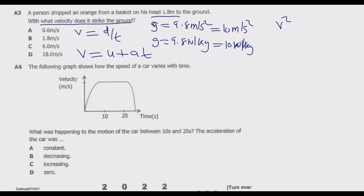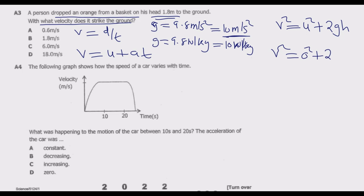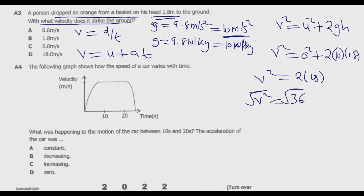Substituting: v² = 0² + 2 × 10 × 1.8 = 2 × 18 = 36. Taking the positive square root gives v = 6 meters per second. Velocity is positive in this context. So the velocity with which the orange strikes the ground is 6 m/s, which is answer C.